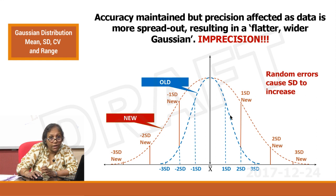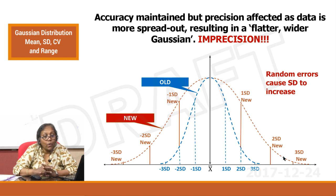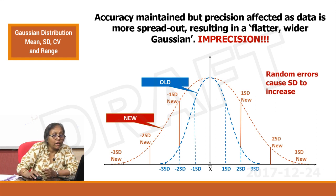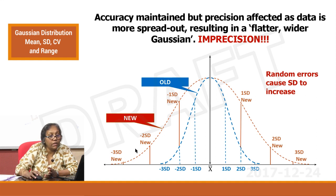Now look at this graph. This was your original curve — a well-rounded sharp Gaussian curve. Over a period of time, your Gaussian has slipped and become very wide. A Gaussian widens because the standard deviation is becoming much bigger.